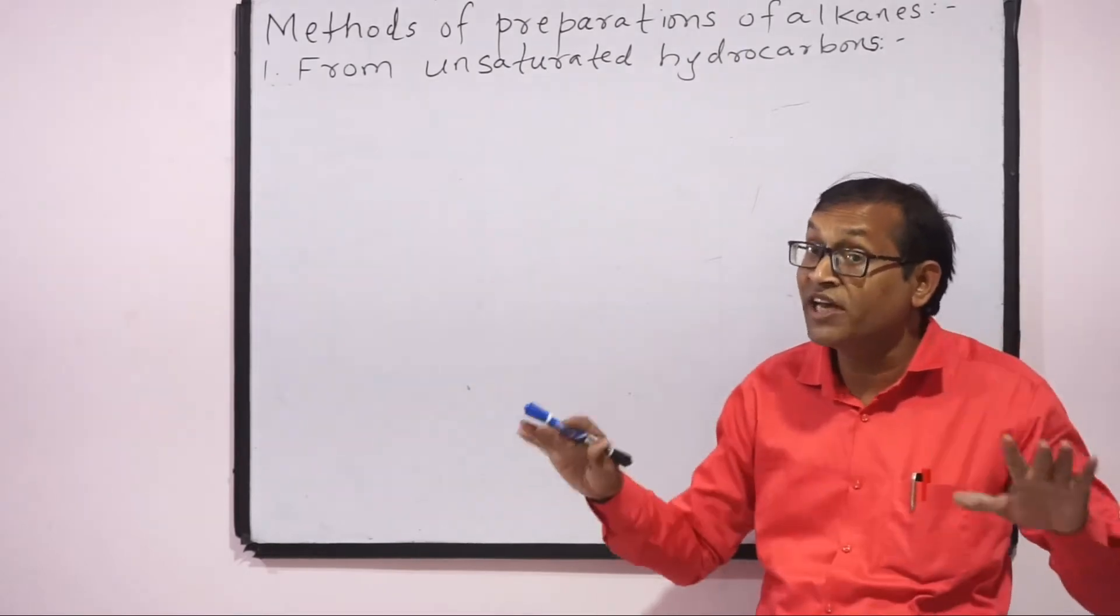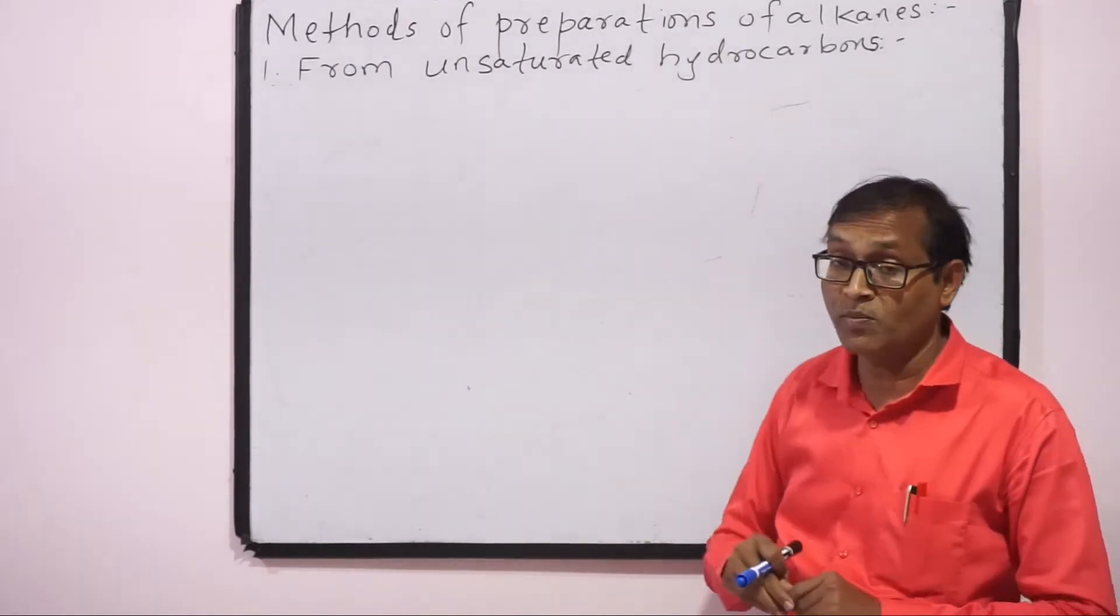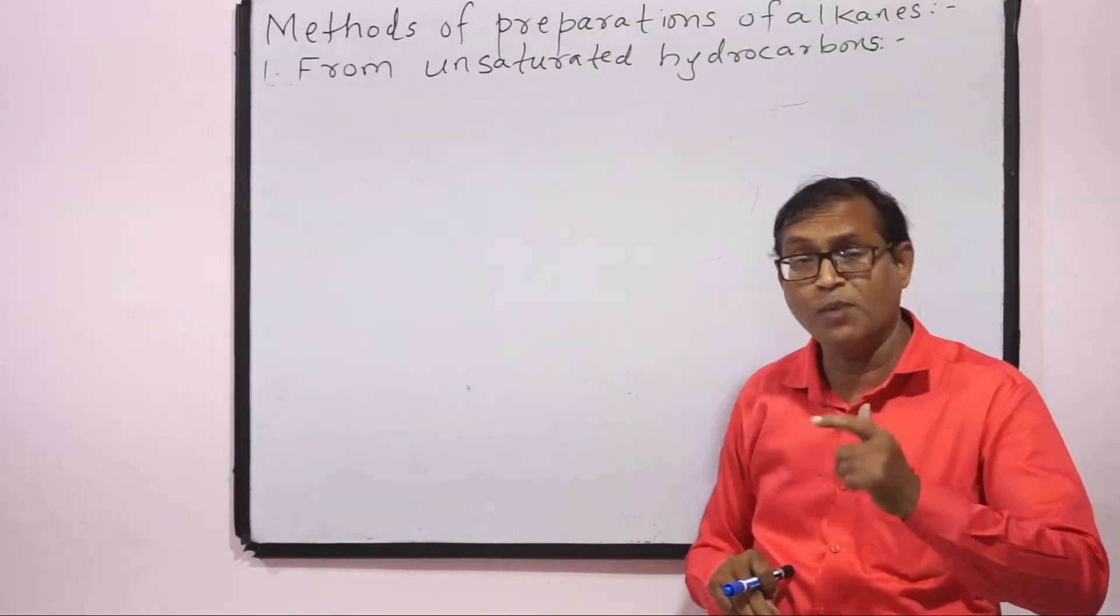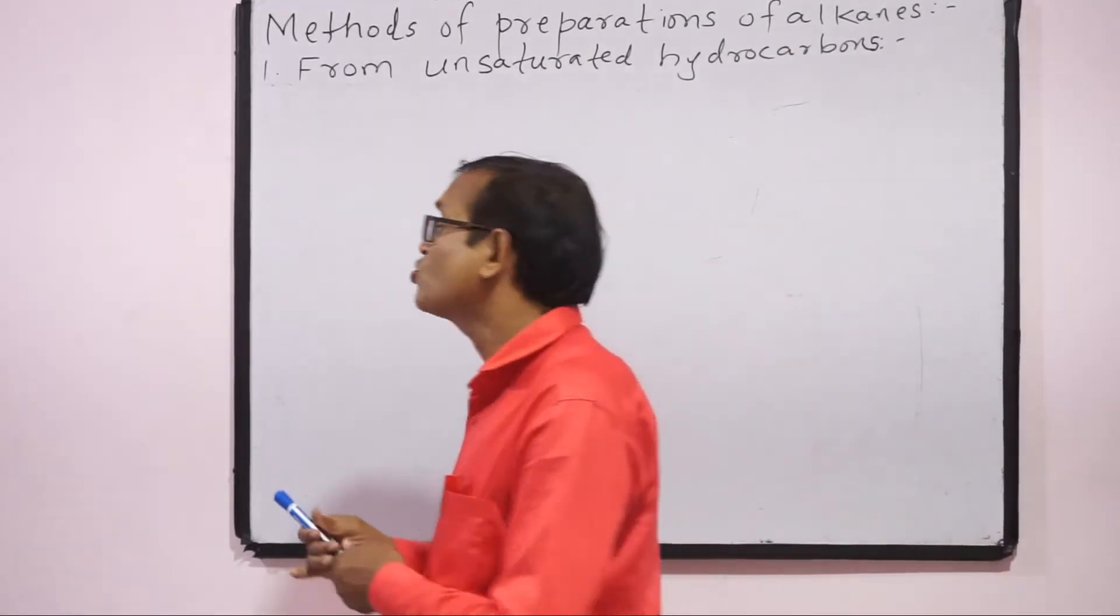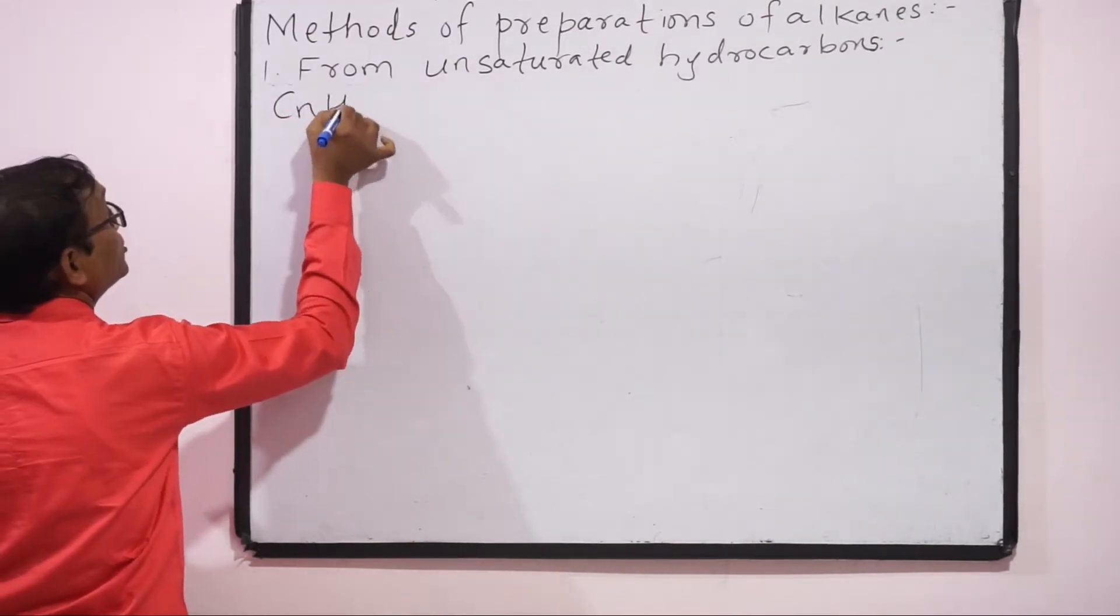Therefore, examples of unsaturated hydrocarbons are alkenes and alkynes, and aromatic hydrocarbons. We are going to use this class. First we consider alkenes whose representation is CnH2n.